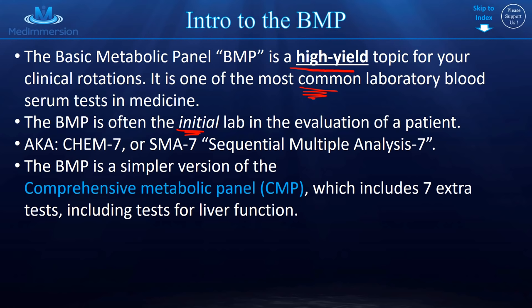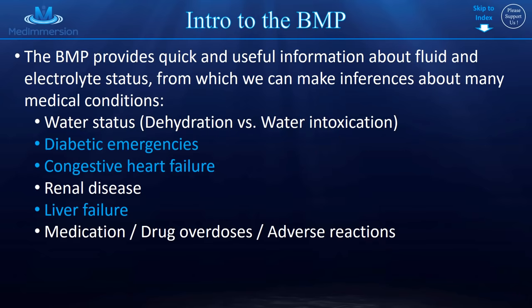The BMP is a simpler version of the CMP, which is the comprehensive metabolic panel, and it includes seven extra tests, so a total of 14 tests, which includes tests for the liver and other electrolytes. What makes the BMP so awesome is that the results come back really quick, and it gives you a broad overview of very useful information about fluid and electrolyte status and a lot of other things from which we can make inferences or guide our diagnoses for further testing.